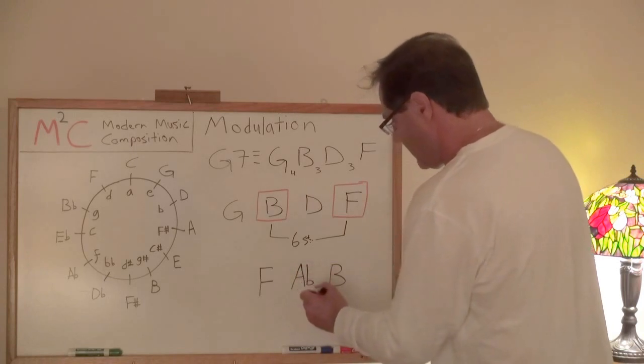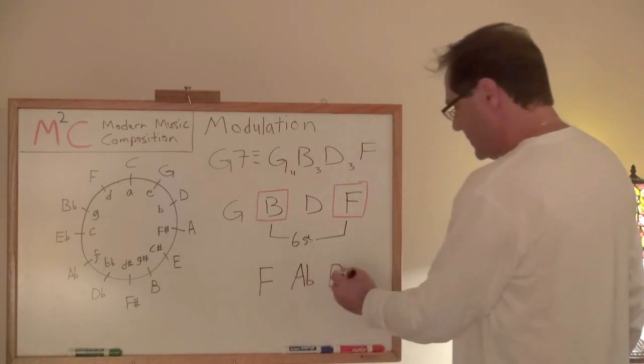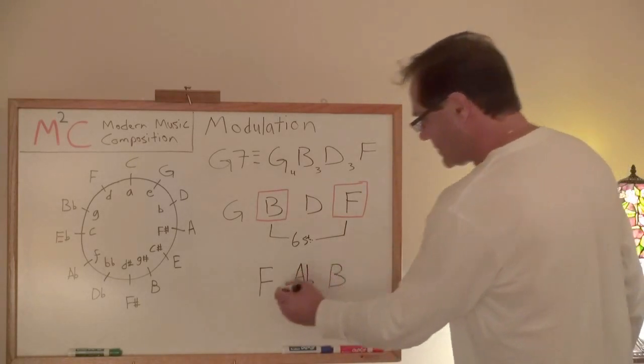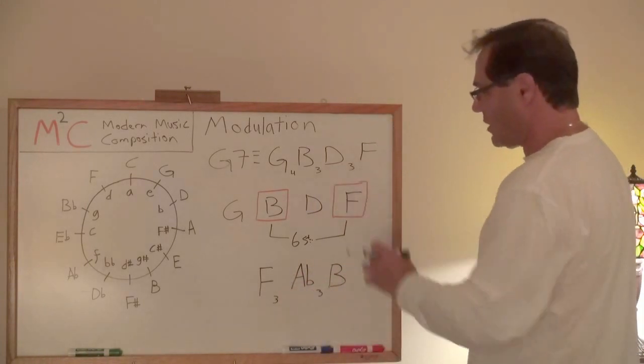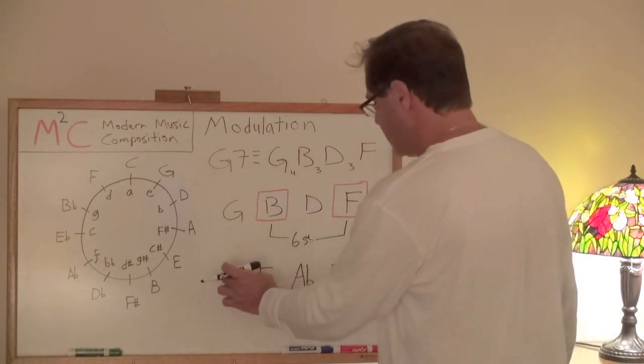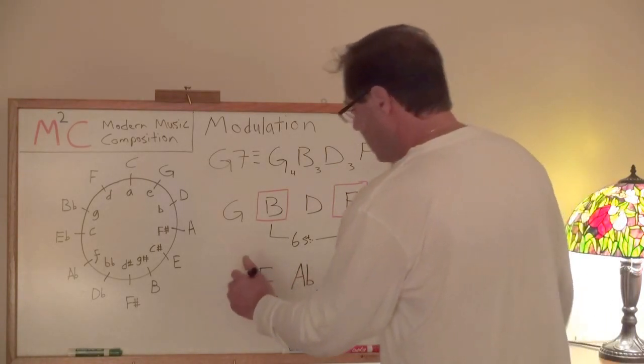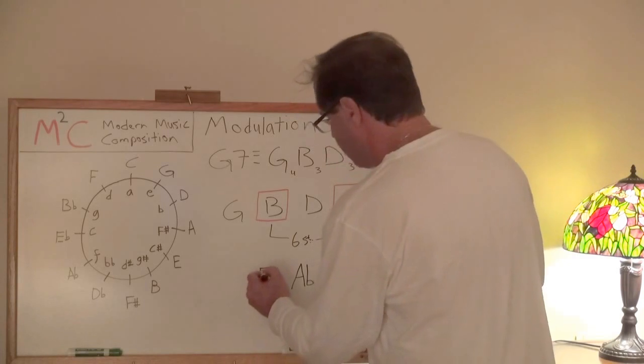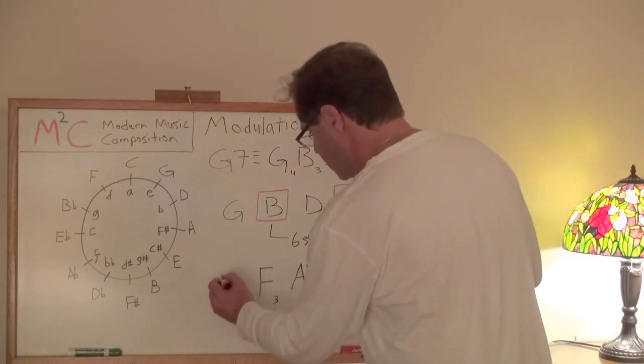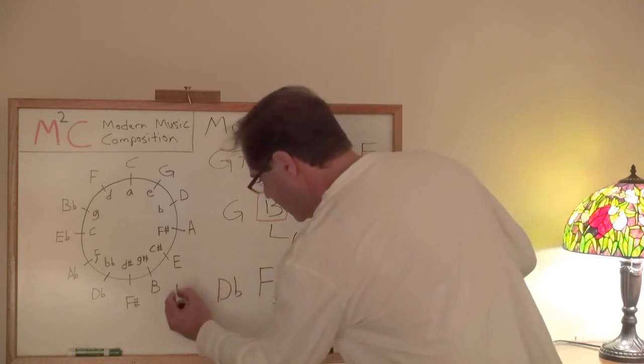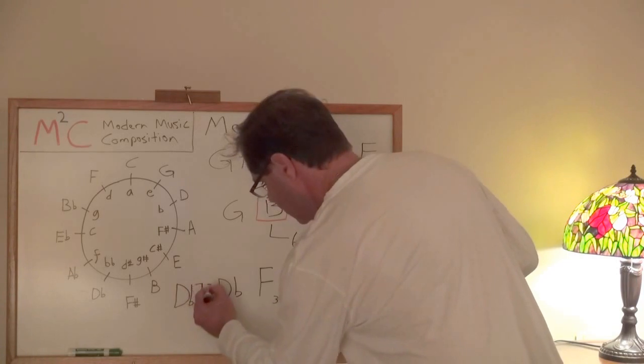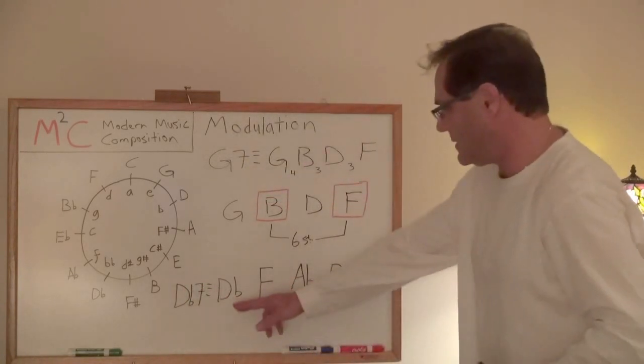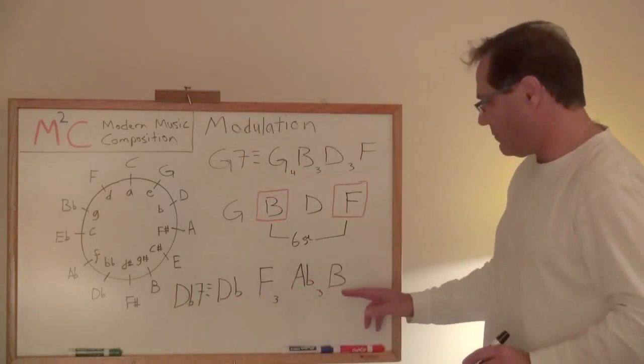And we know from A flat to B, that's three semitones. So we've satisfied that requirement. And now we just need to build out the front part of this. That's going to be four semitones down from F, which is our D flat. So then D flat seventh is defined as D flat, F, A flat, B.